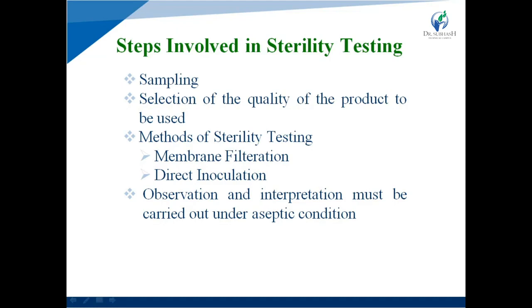Steps involved in sterility testing: First, sampling occurs — a sample is taken from any product or preparation. Then, selection of the quality of product to be used. The method of sterility testing involves two methods: the first is membrane filtration method and the next is direct inoculation method.